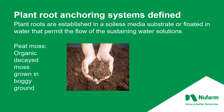Contrary to the organic slag previously mentioned, peat moss is organic decayed moss grown usually in boggy grounds, harvested, packaged, and sent to growers across the country. This is used as a place for the roots to be established, and the hydroponic fluids flow through and around this material as the plants are anchored.